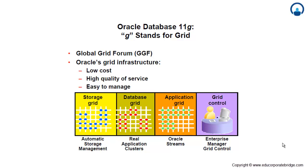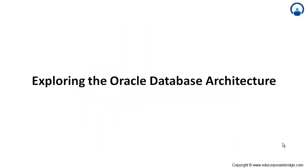The storage grid is automatic storage management, which is a new feature. The database grid includes Real Application Clusters, normally called RAC. The application grid includes Oracle Streams, which is used to transfer data from one database to another. Grid control uses Enterprise Manager grid controls to see the internal structure of the database.